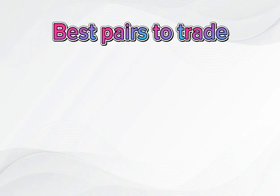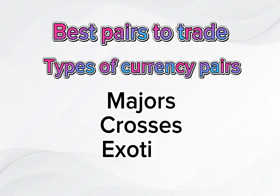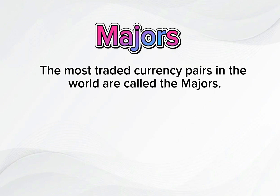There are three different types of currency pairs: the majors, the crosses, and the exotics. The most traded currency pairs in the world are called the majors.